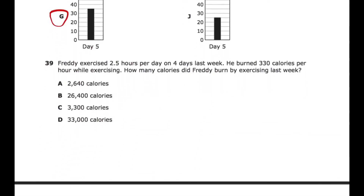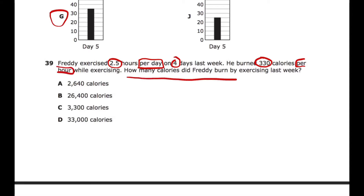Question 39: Freddy exercises two and a half hours per day. We talked about how 'each' typically signals multiplication or division, and 'per day' means each day. On four days of last week he burned 330 calories per hour while exercising. We need to find the total calories Freddy burned. Two and a half hours per day for four days — we multiply those numbers to find total hours.